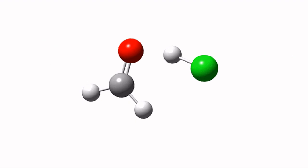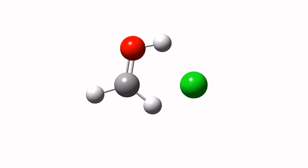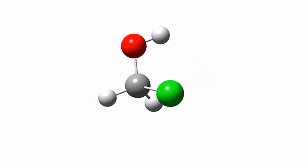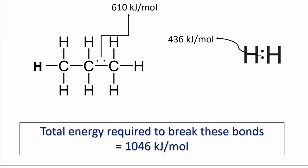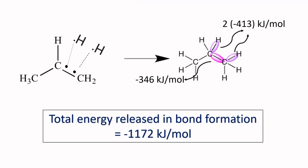So two bonds, C double bond C and H single bond H, will be broken down to form new bonds. The enthalpy of the C=C bond is 610 kilojoules per mole, while the enthalpy of the H-H bond is 436 kilojoules per mole. So the total energy needed to break these bonds is 1046 kilojoules per mole.